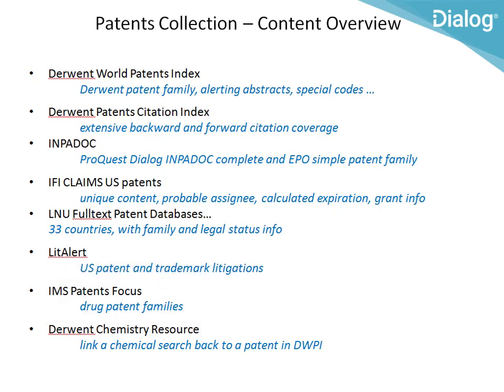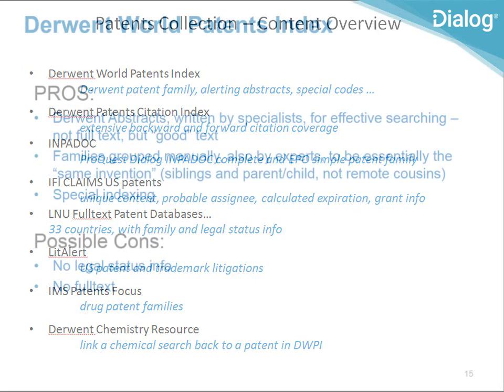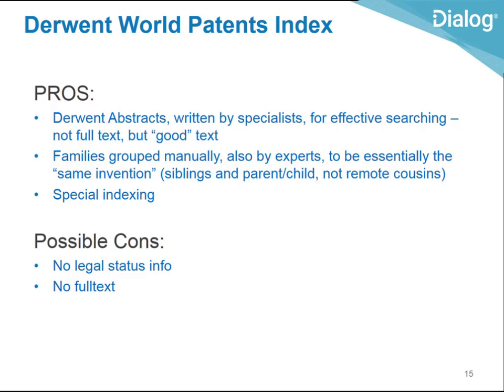Derwent World Patents Index was at one time the single most widely used patent database. It's very good for term searching because it has abstracts written by Derwent specialists — written for searchers using the kind of language a searcher is likely to use. Their family information is put together manually by experts, so the families represent essentially the same invention. Derwent also has a number of special indexing fields unique to that database. However, it does not have legal status information, so it's not the place to check if a patent has been reassigned or expired. It also does not have full text.